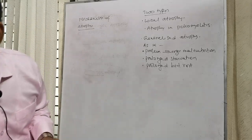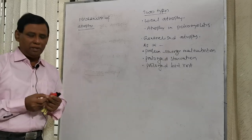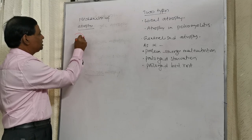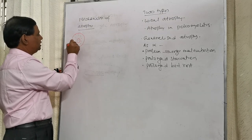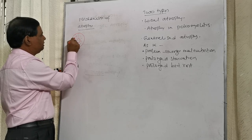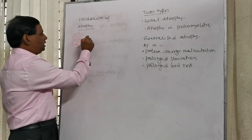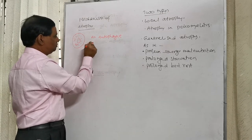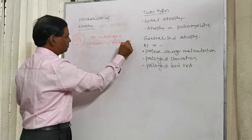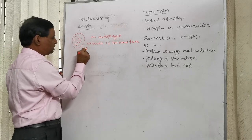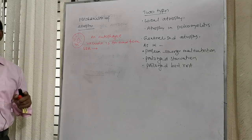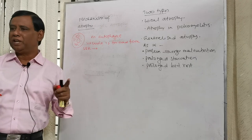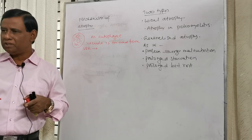Mechanism of atrophy: it is not clearly known how a cell undergoes atrophy. But the suggestion is that this is the cell with its nucleus, cytosolic proteins, organelles, and rough and smooth endoplasmic reticulum. The suggestion is that an autophagic vacuole is formed from the smooth endoplasmic reticulum. Then the substances that will be lost from the cell are sequestered in the autophagic vacuole.